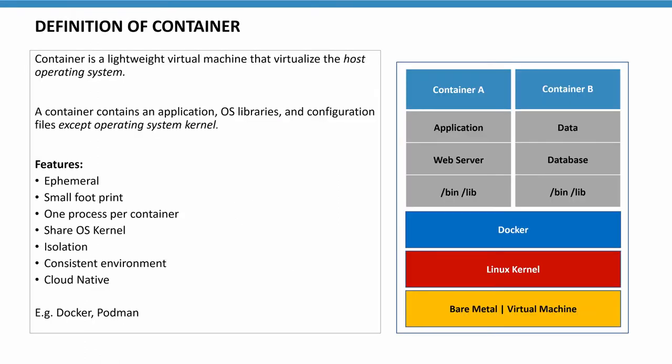A container is a lightweight virtual machine that virtualizes the host operating system. Remember the key difference: a virtual machine is slicing the hardware, while a container is slicing the operating system. A container has a small piece of the operating system — about 2 to 3% of the operating system that is necessary for your application. Look at the diagram on the right side: the bare metal or virtual machine has a Docker daemon, and on top of Docker, we run multiple containers.